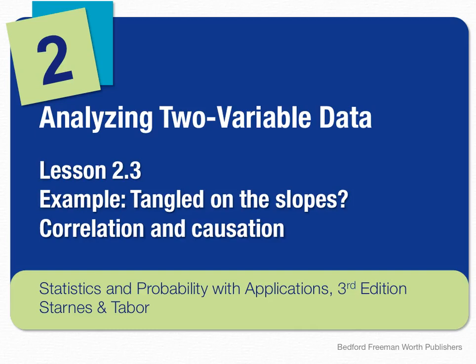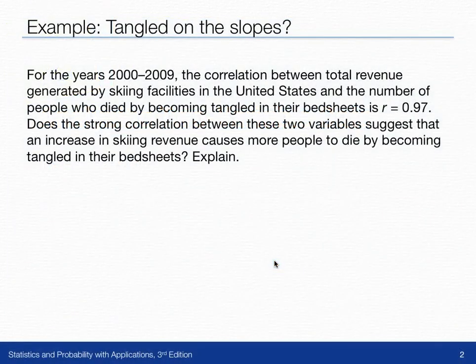In the lesson 2.3 example, Tangled on the Slopes, we're going to look at whether correlated data actually has a causal relationship or not. For the years 2000 to 2009, the correlation between total revenue generated by skiing facilities in the United States and the number of people who died by becoming tangled in their bedsheets is 0.97.